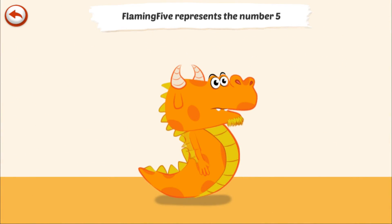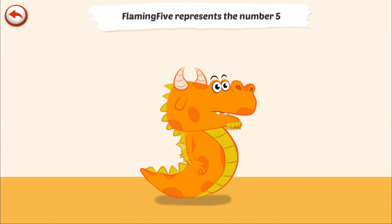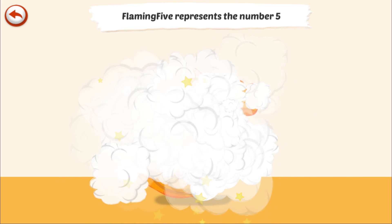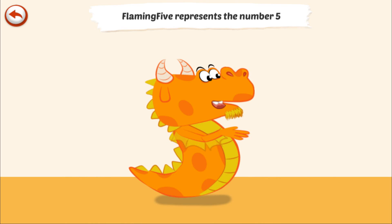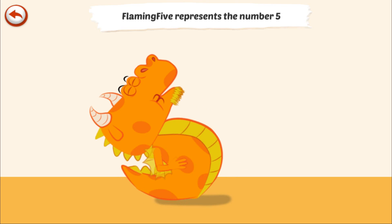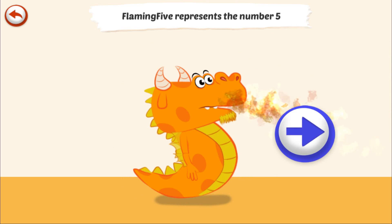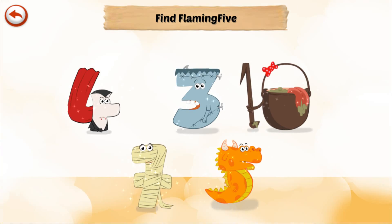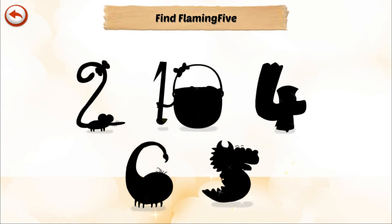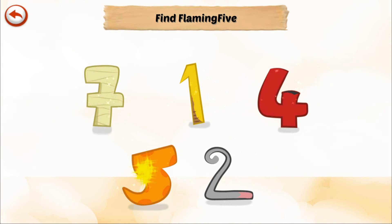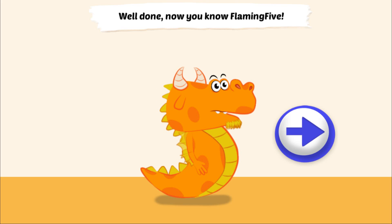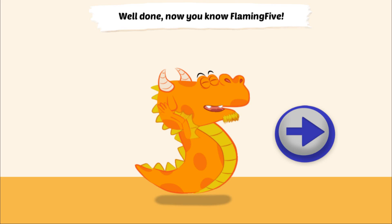Flaming 5 represents the number 5. Flaming 5 is a dragon who likes setting fire to things — he can't help breathing flames. Well done! Now you know Flaming 5.